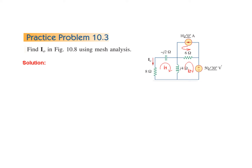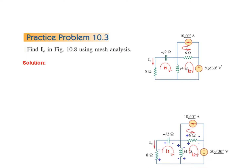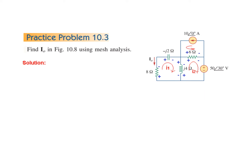First of all, we mark the three currents and the three meshes or loops. We can mark any direction — it doesn't matter. This one we are calling i1, this one i2, and this one we have not given any name because this is the only current: 10 amperes. Then we mark the polarities depending on the current — wherever the current enters, I mark that point as positive and the other side negative.